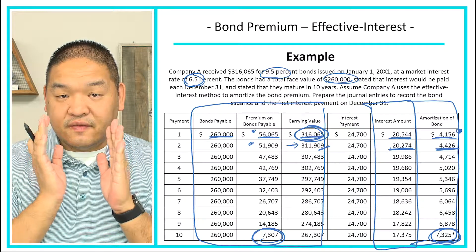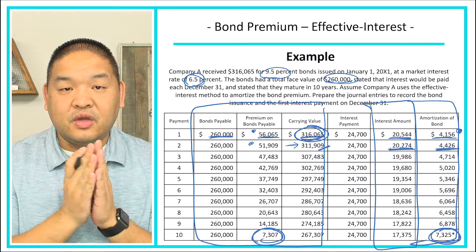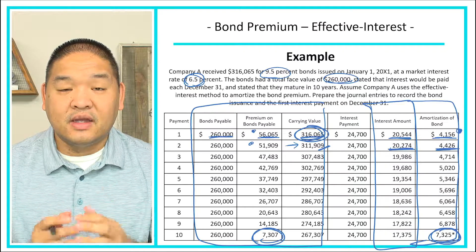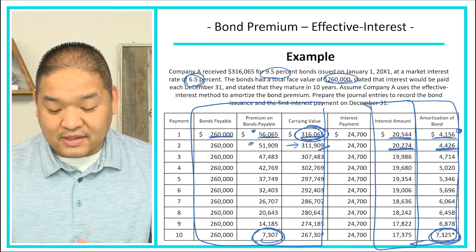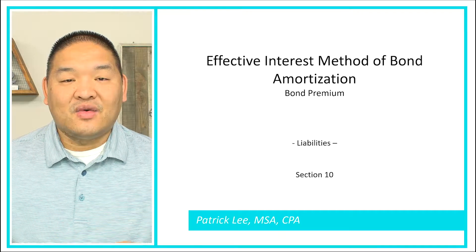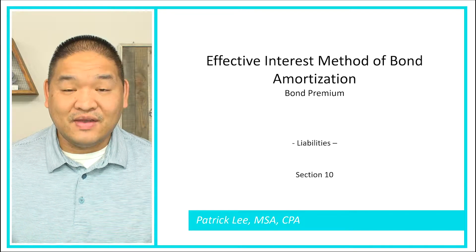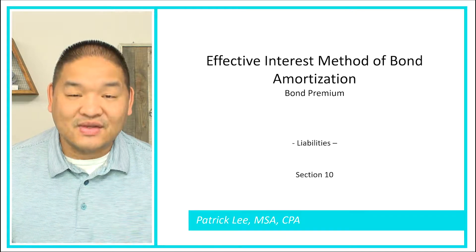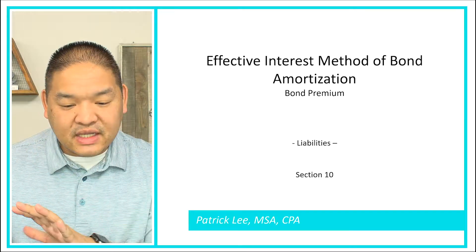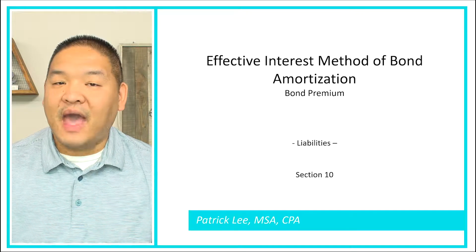To summarize: you need to know the face value of the bond and the stated interest rate, but you also need to know the carrying value and the effective interest rate to calculate the interest expense. The effective interest method is a little confusing, but if you do it step-by-step or just put the amortization table together and do your calculations, you'll have it down.